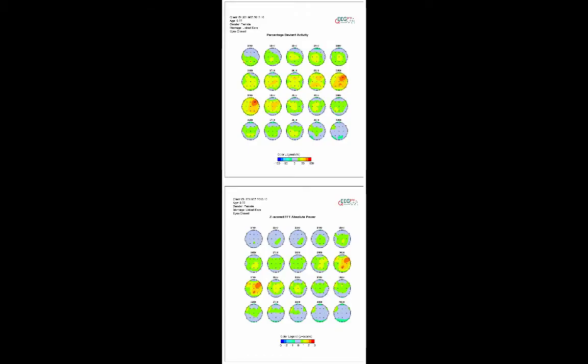This means that the deviant average z-score that can be seen in the same frequencies and electrode sites in the absolute power results is present in the EEG recording most of the time.